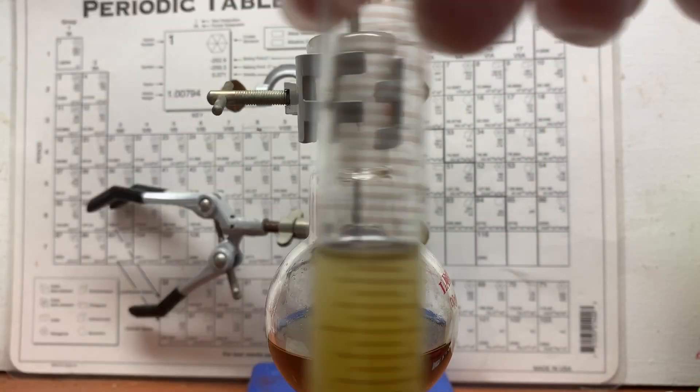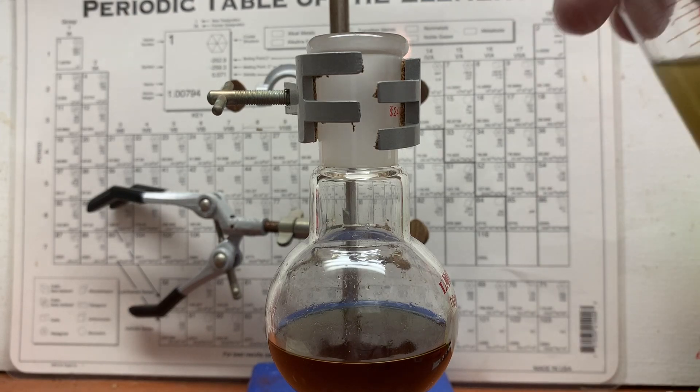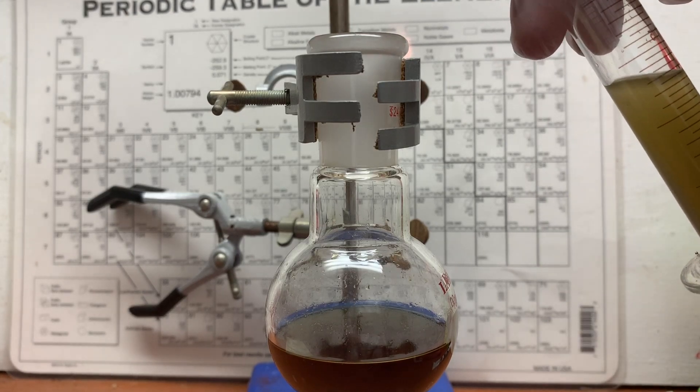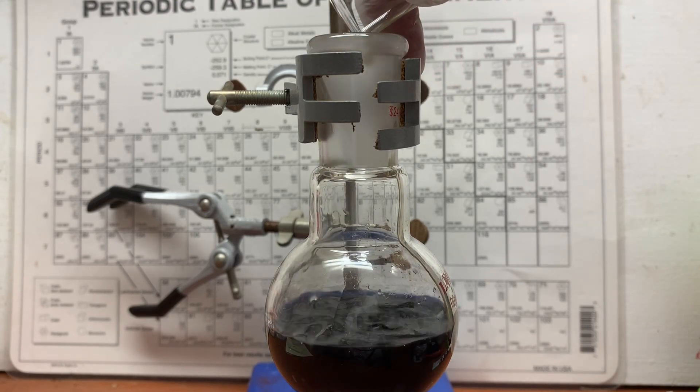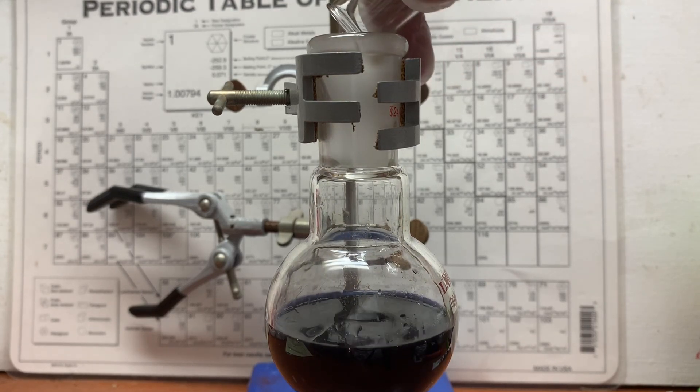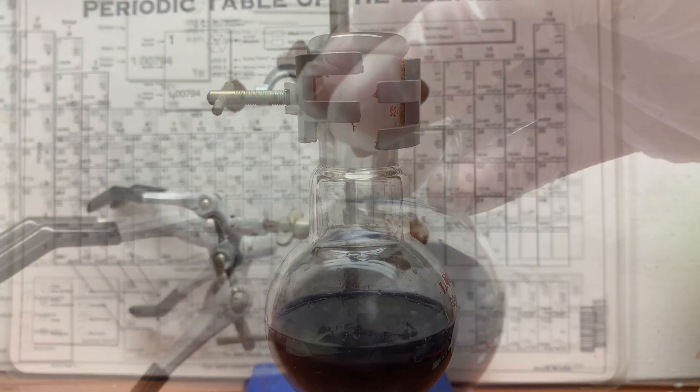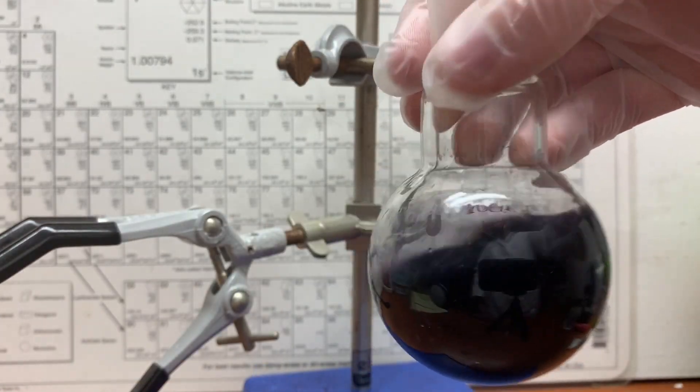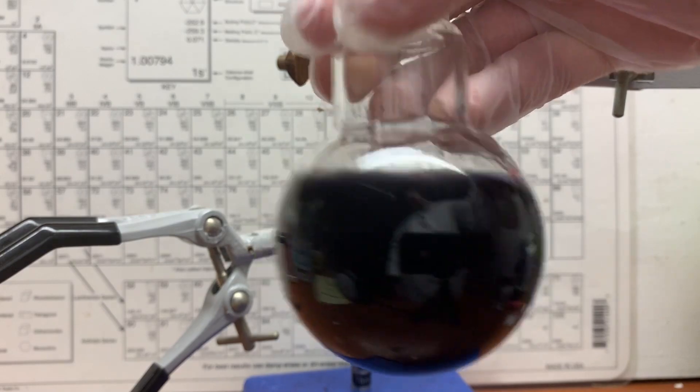Now for the really fun part, the color change. So what we're going to do here is add the ferrous sulfate solution into the tannin solution. What's happening here is the polyphenols are chelating the iron two ions, but since this is an unstable oxidation state, it readily oxidizes to iron three and it gives you this really nice coordination complex.